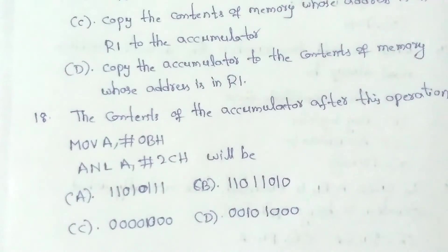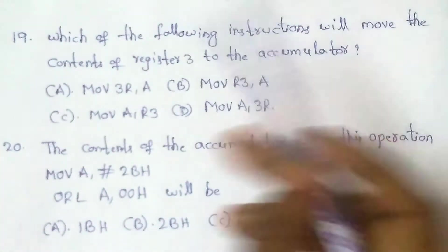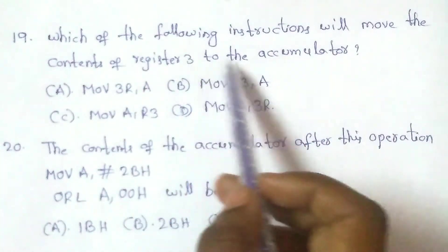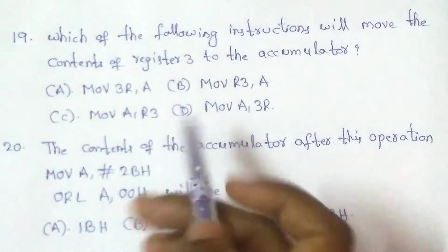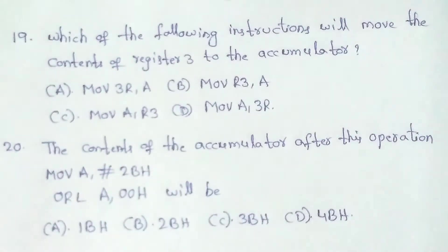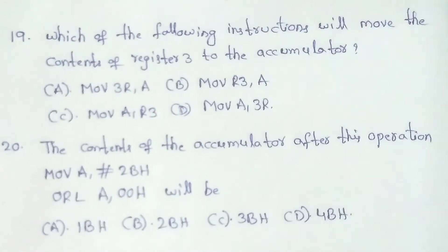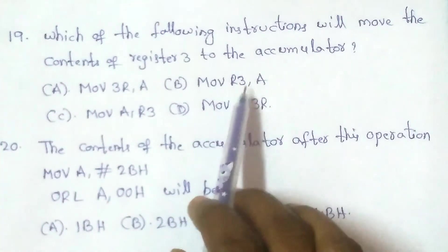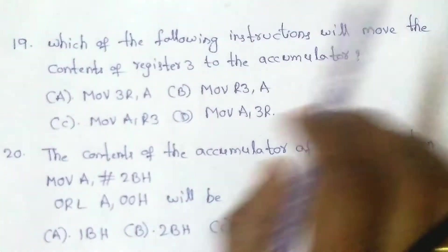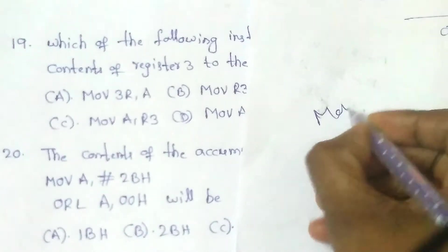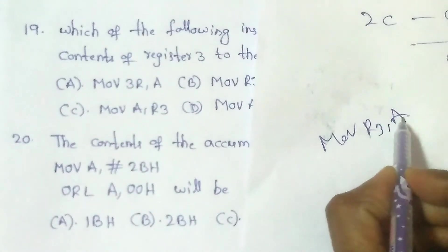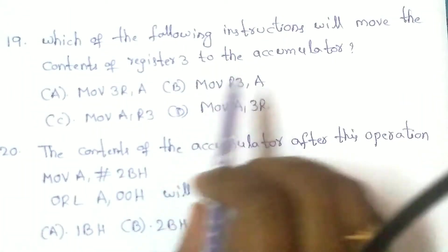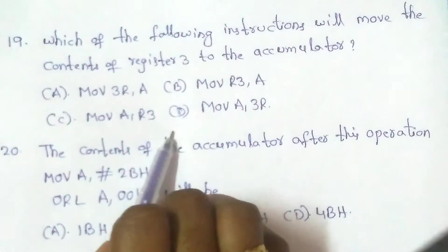Next question: Which of the following instructions will move the contents of register 3 to the accumulator? Options involve variations of MOV with R3 and A. If R3 is register 3 and A is the accumulator, the correct 8051 syntax to move R3 to the accumulator is MOV A, R3. Answer: option C, MOV A, R3.